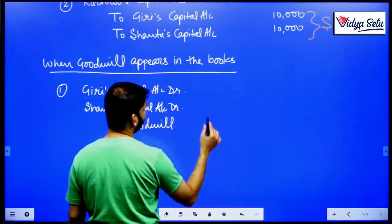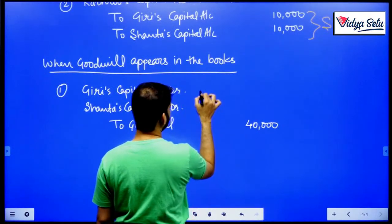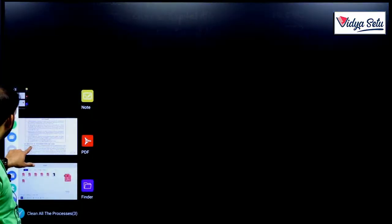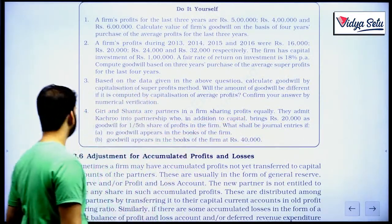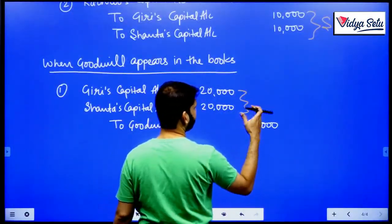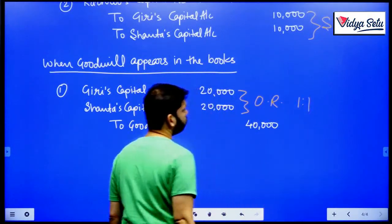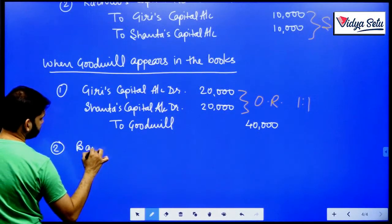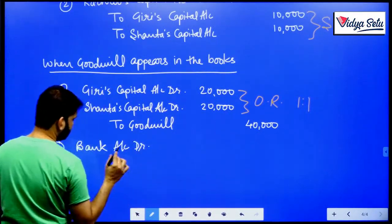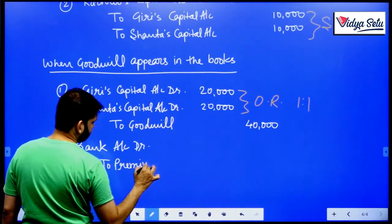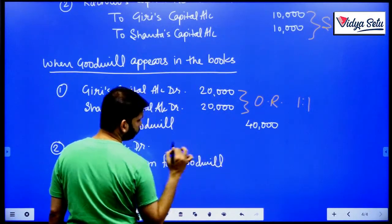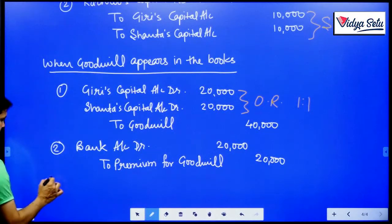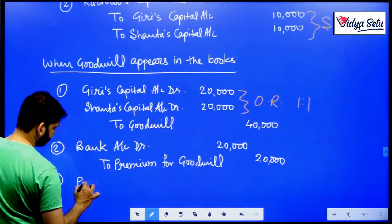When goodwill appears in the books at 40,000, we first need to write off the goodwill in the old ratio. Old ratio was given as profits equally, so old ratio 1:1. The journal entry will be: Bank Account debit to Premium for Goodwill 20,000, and this premium for goodwill will be distributed amongst the sacrificing partners in the sacrificing ratio of 1:1 — 10,000 and 10,000 each.